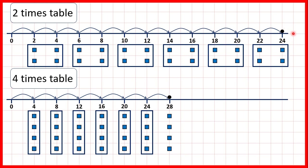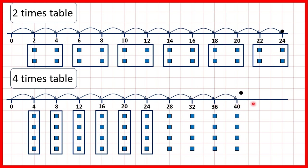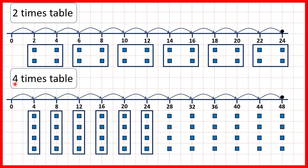Next, counting in 2's, we would have 26 and then 28. Carrying on in 4's we have 32, 36, 40, 44, and 48. All of these numbers would also be in our 2 times table if we kept counting in 2's. Notice with the 4 times table, numbers always end in 2, 4, 6, 8, or 0 — so multiples of 4 are always even numbers, and any even number is always in the 2 times table.